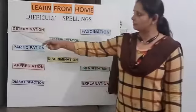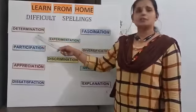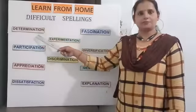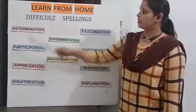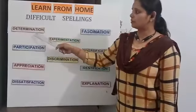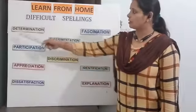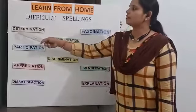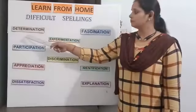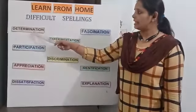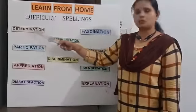I'll start with the first word. The first word is 'determination.' We'll break up this word and then learn it: D-E-T-E-R — 'deter' — M-I-N — 'min' — N-A-T-I-O-N. So: 'deter' + 'min' + 'ation' = determination.